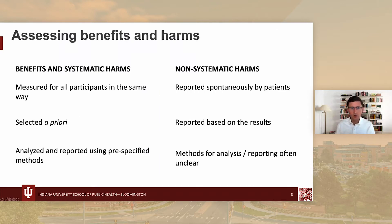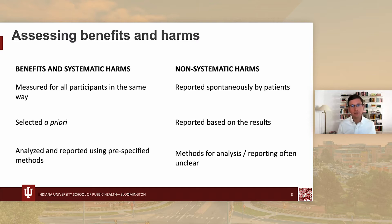There are a couple of different kinds of harms. Some harms are collected and analyzed like the benefits in clinical trials — measured for all participants in the same way, selected a priori, described in trial registration or protocol, and analyzed using pre-specified methods. We refer to these as systematic or systematically assessed harms. But then there's another group — non-systematically assessed harms — which are reported spontaneously by patients, often based on results, with unclear or unspecified methods for analysis.